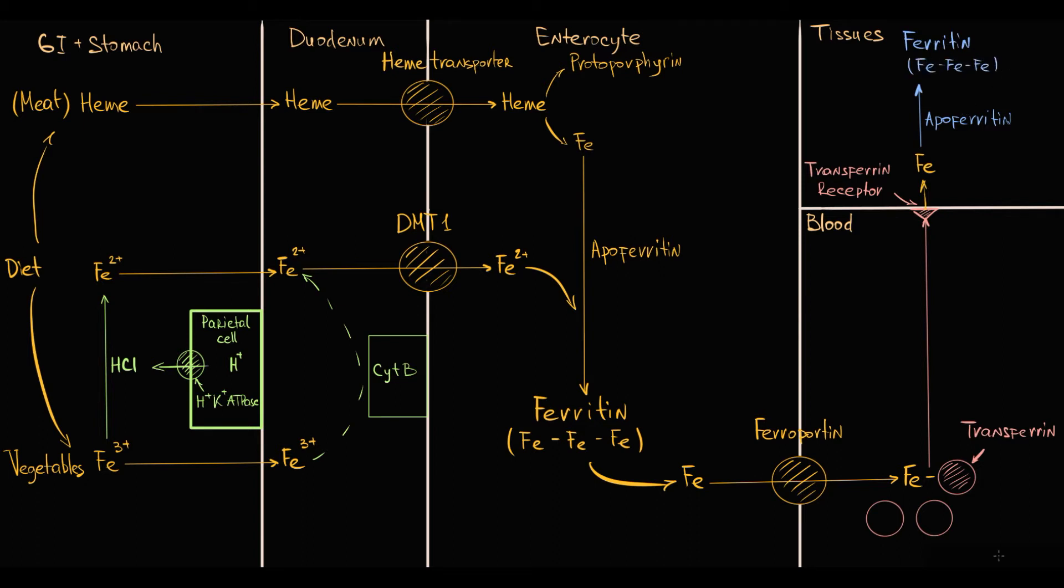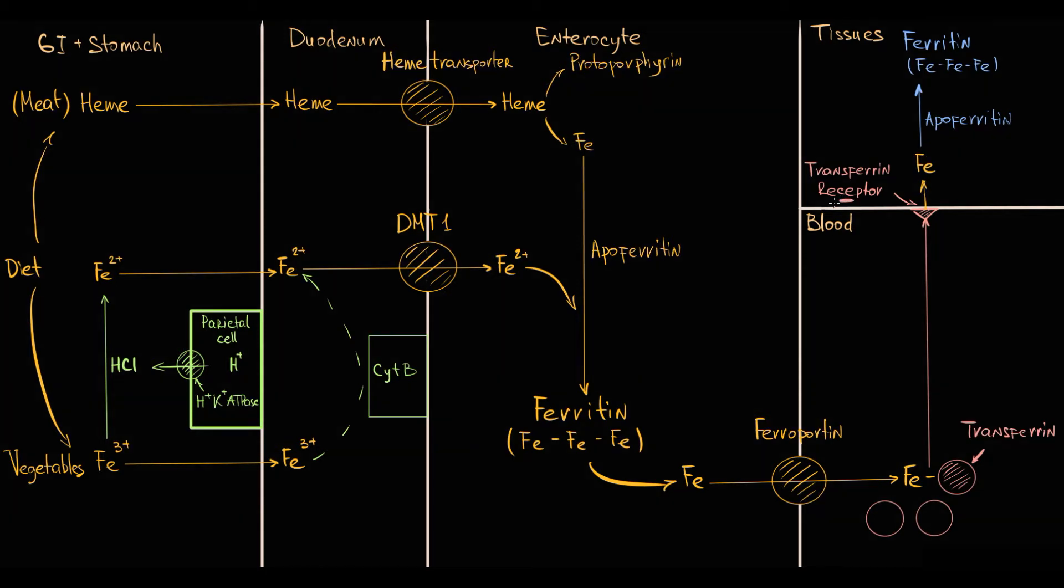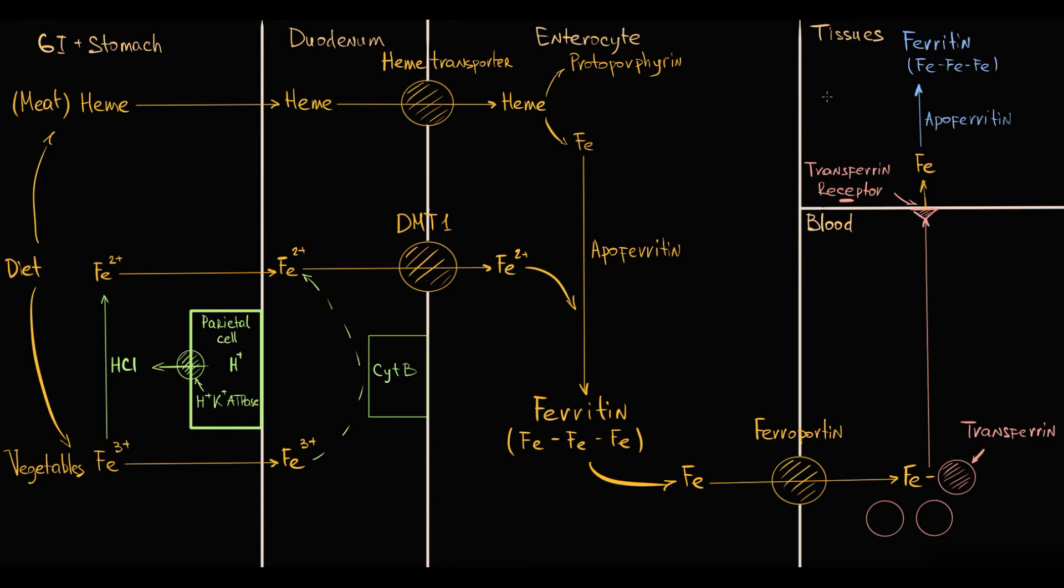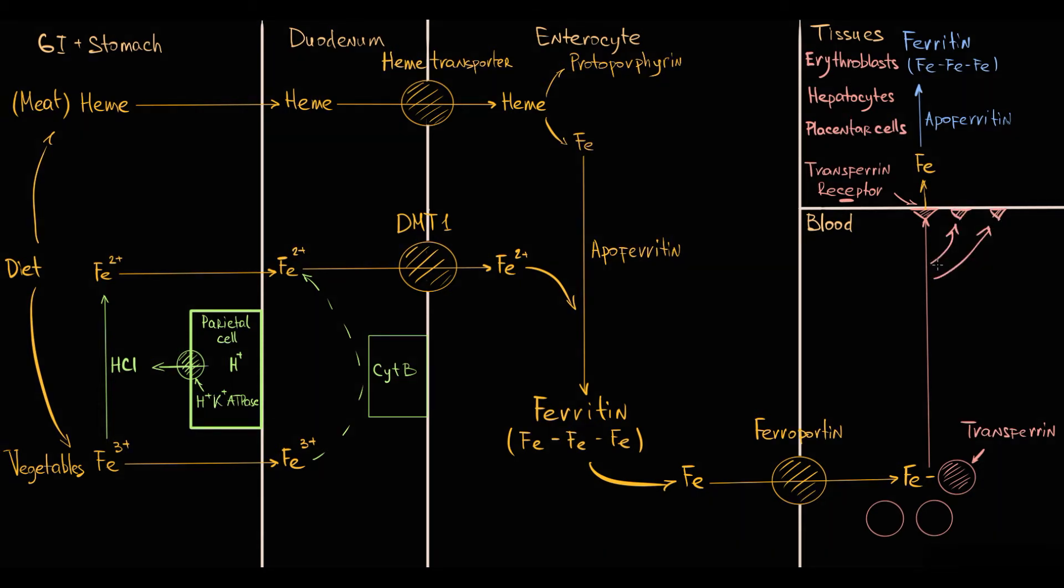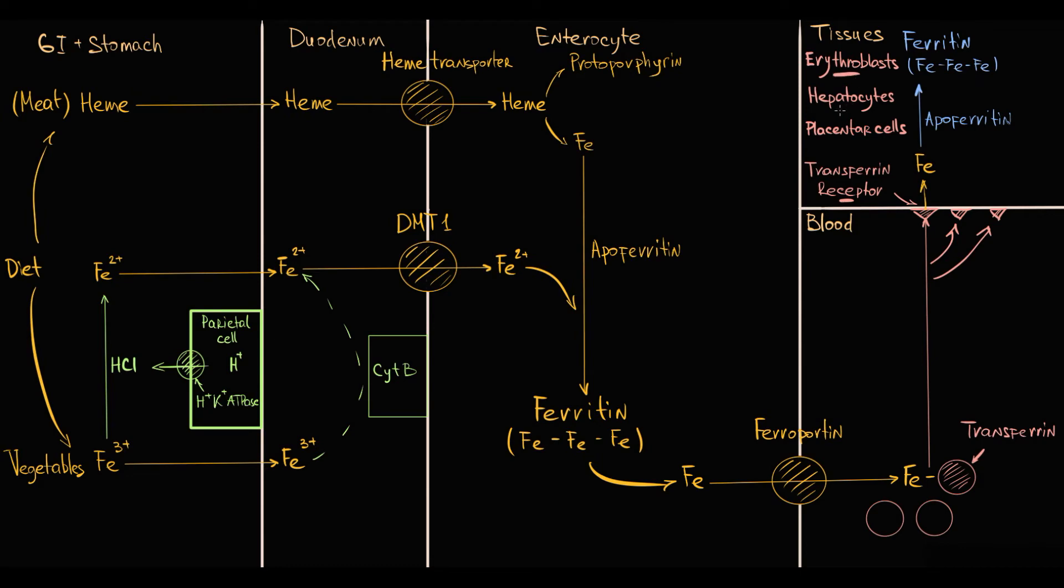Most cells in the body have transferrin receptor on their cellular surface, but the amount of transferrin receptor is the highest on erythroblasts, hepatocytes, and placenta cells. And the higher the amount of transferrin receptor, the higher the iron delivery to the cell. So exactly these cells are the major iron consumers in our body.